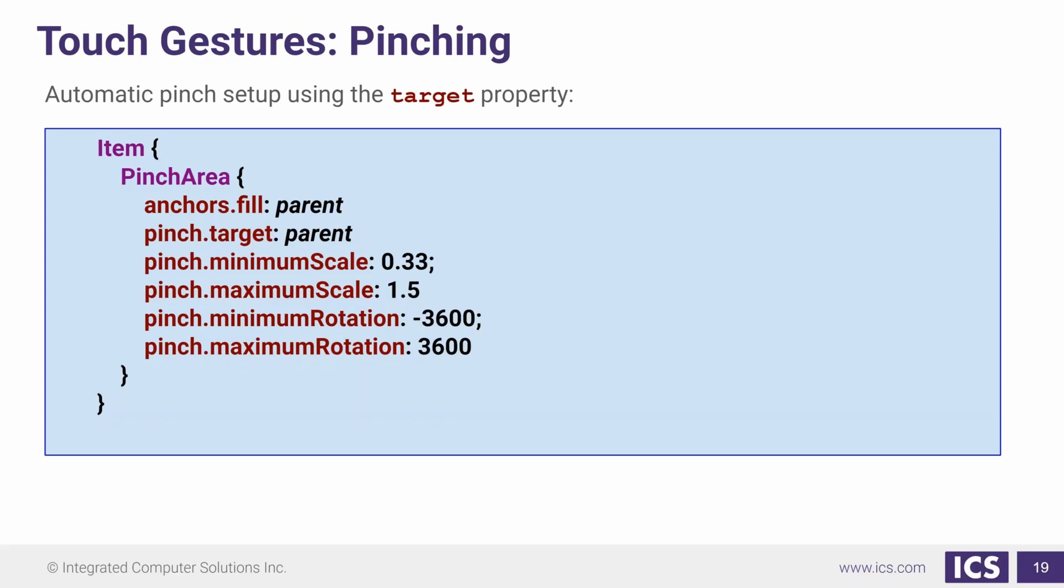Here's the basic setup of a PinchArea. We have a target. It is filling its parent. Its pinch.target is going to be its parent. So that means when the pinch is happening, it's going to affect the parent. We set a minimum scale for this and a maximum scale so we could do the zooming. And also we set a minimum, maximum rotation. They're over rotate, so you can rotate way past just 360. It won't just stop.